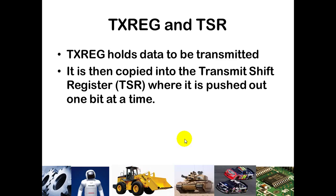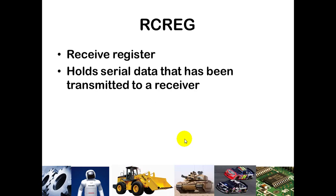TXREG holds the data to be transmitted — it's the 8-bit register where we send out information. That data gets copied to the TSR and pushed out least-significant-bit at a time, effectively rotated right through the data transmit pin, shifted at whatever baud rate you've set. RCREG is on your receiver — that's where received data is held until you read it.